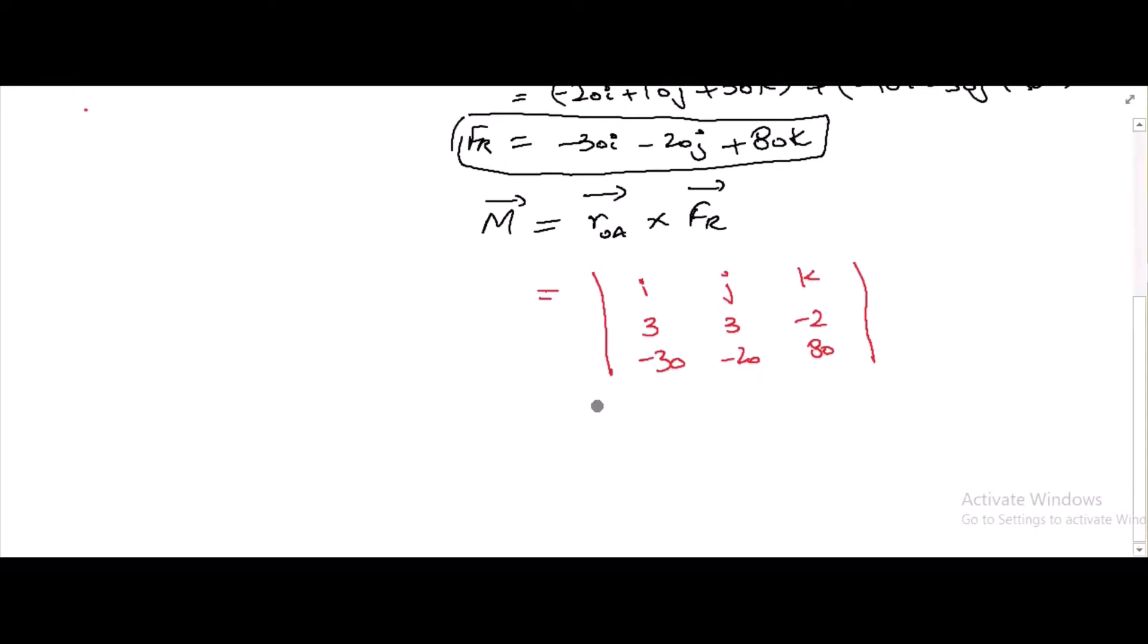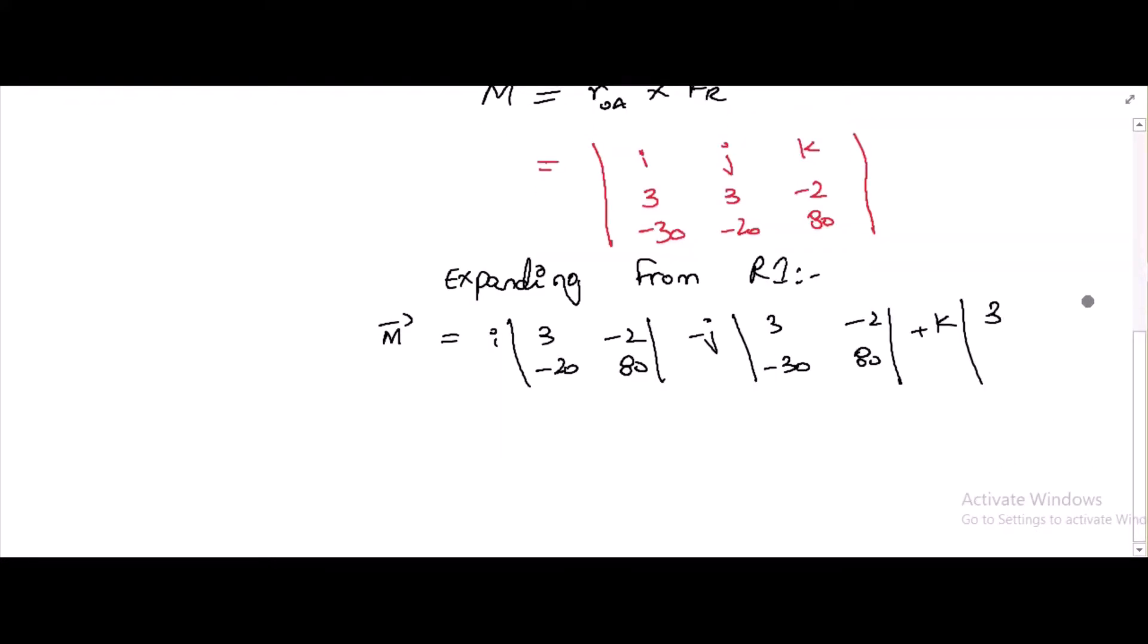And by solving it by expanding from ROA, I have moment is equal to i times 3, negative 20, negative 2, 80, negative j times 3, 3, negative 30, negative 2, 80, plus k times 3, 3, negative 20, negative 30.